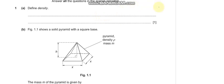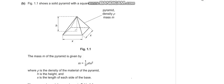Question 1A says: define density. That is mass per unit volume. Let's move on to part B.